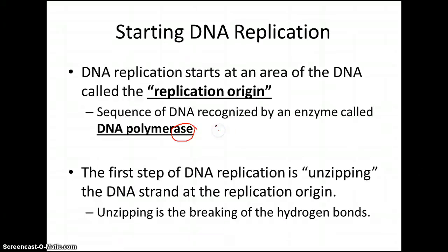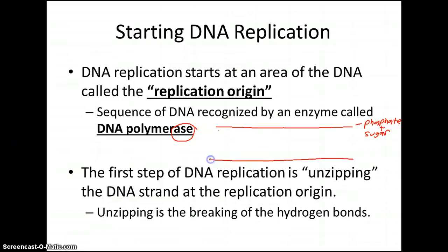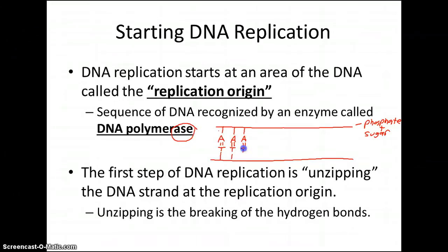Let me draw a picture here. We'll draw a line to represent the phosphate and the sugar backbone. Then we'll draw another one because DNA is double stranded. In the middle, let's say we have an adenine — because of the base pairing rule we'd have a thymine opposite it with two hydrogen bonds. Let's say we had another adenine and another thymine with two hydrogen bonds, another adenine with a thymine, and a guanine with three hydrogen bonds paired with cytosine, and a thymine with two hydrogen bonds paired with an adenine.